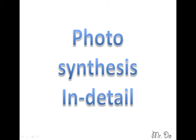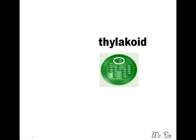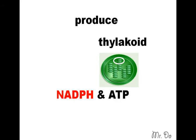Photosynthesis in detail. This is a thylakoid. A thylakoid produces two things for photosynthesis: NADPH and ATP.